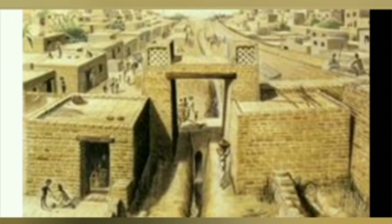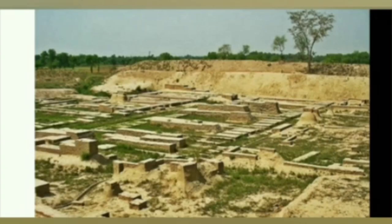Let us have a look at the cities and buildings of this civilization. Town planning is one of the unique features of the Indus Valley Civilization. Harappan cities were very well planned. Most of these cities were divided into two parts: the upper town and the lower town.